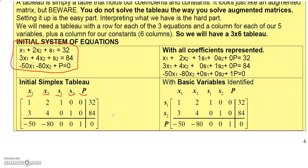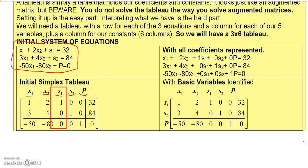What this does is it gives me kind of the worst-case scenario to start. If you take a look at these columns, the S1 column has 1, 0, 0 and the S2 column has 0, 1, 0.